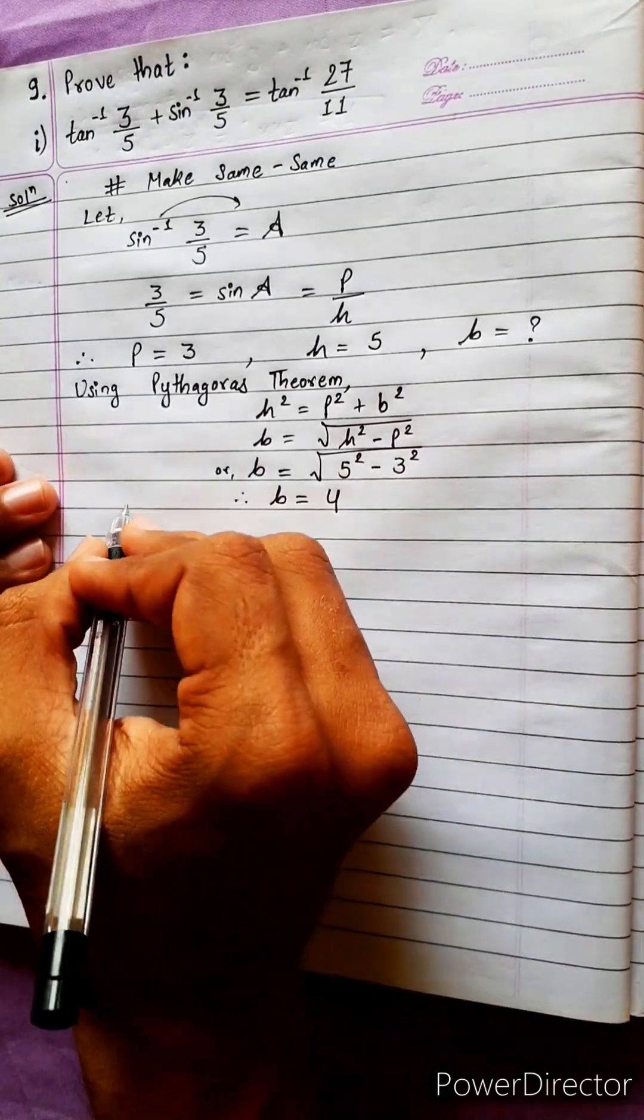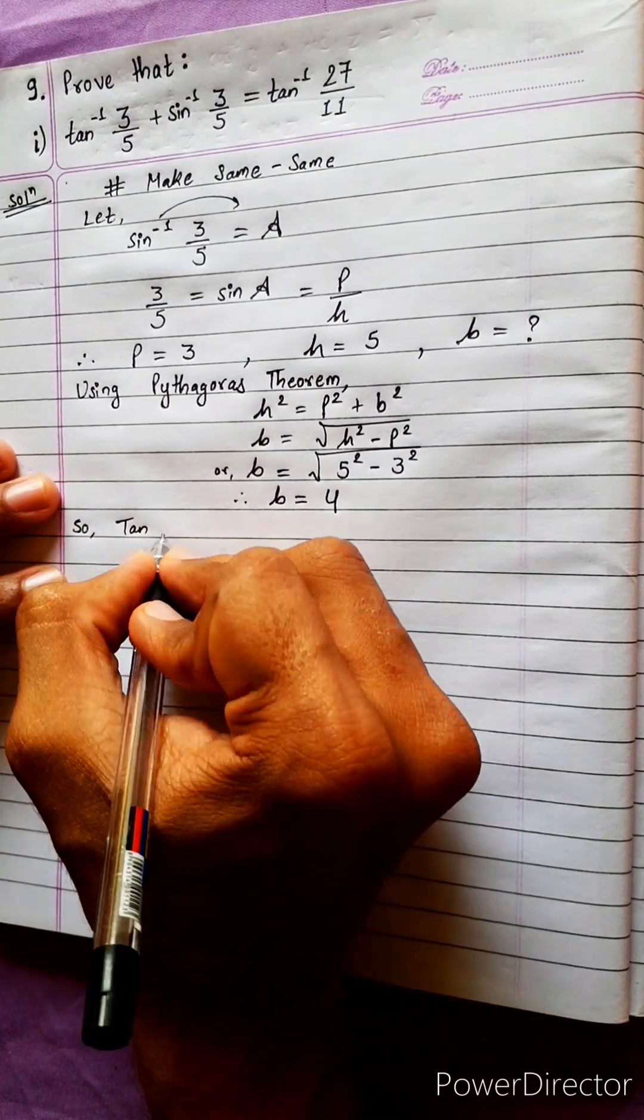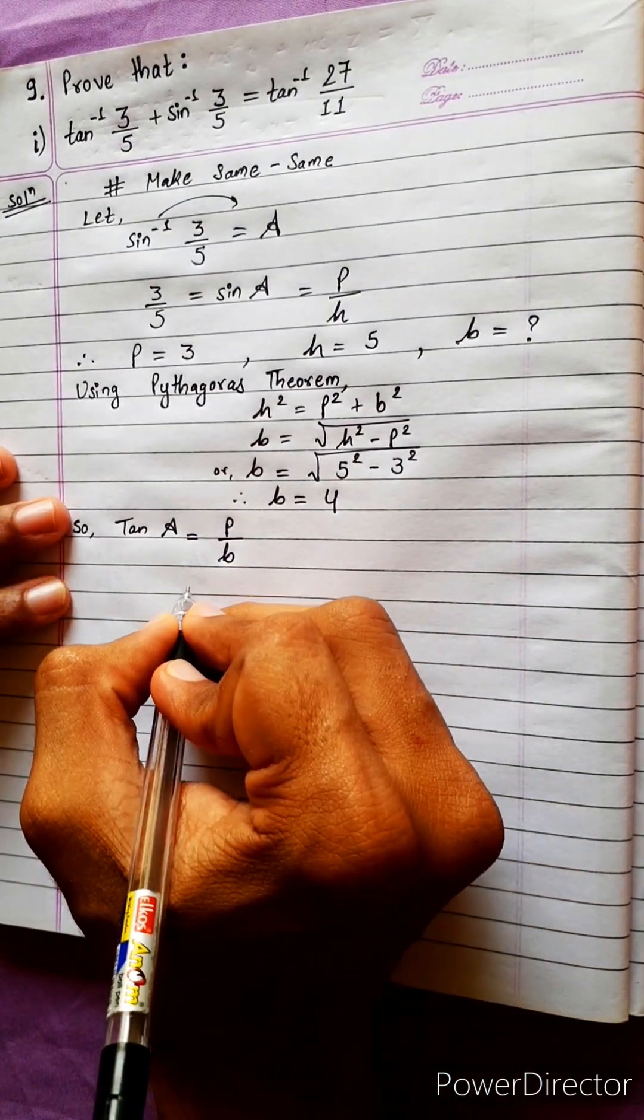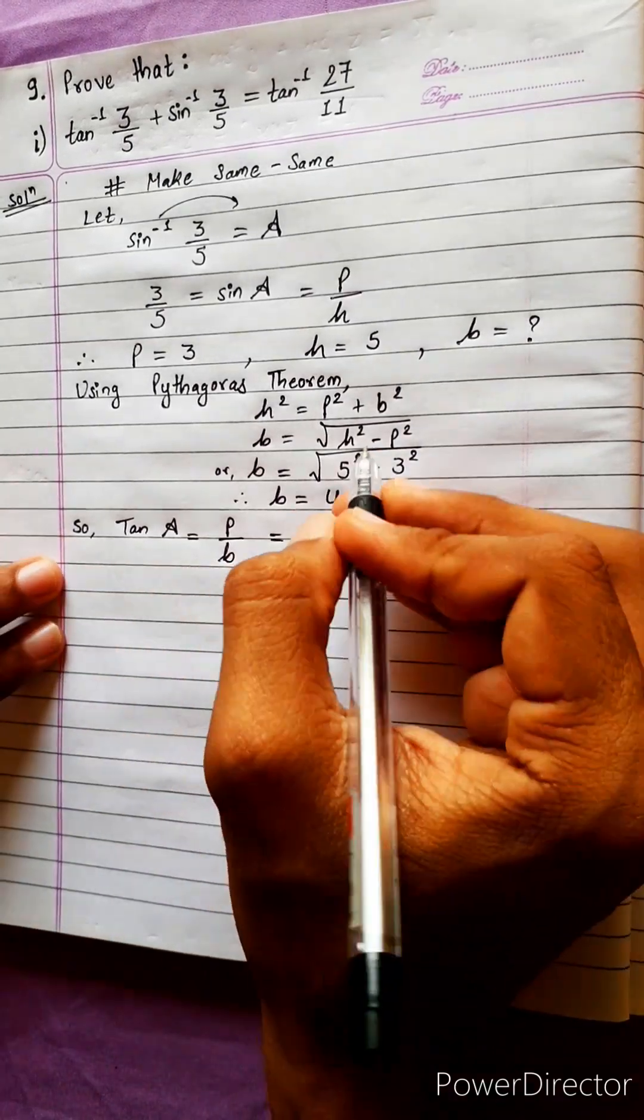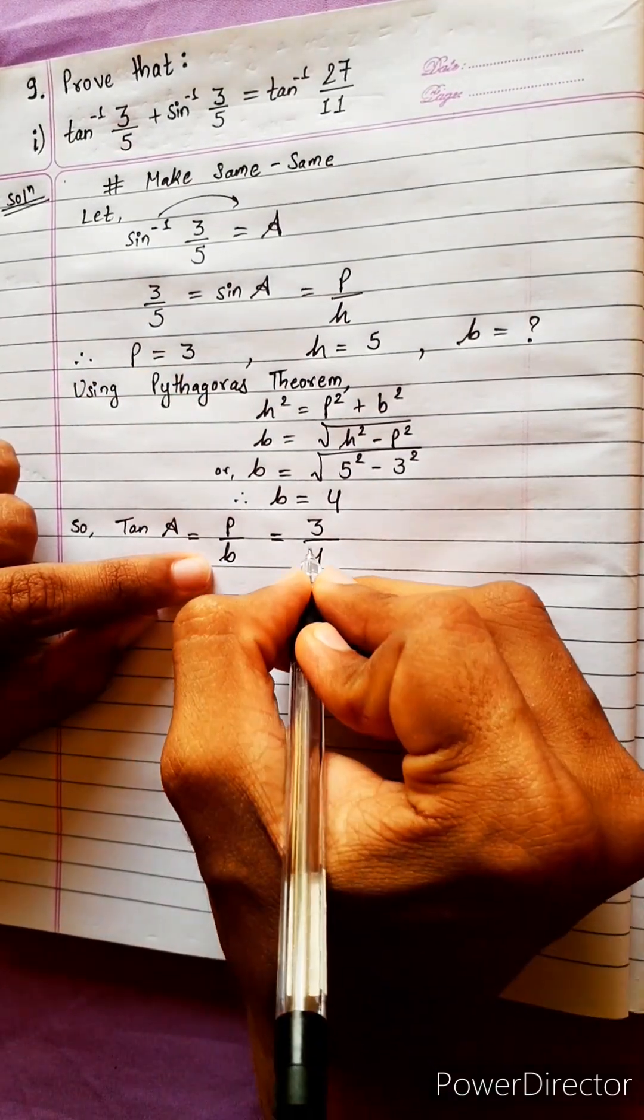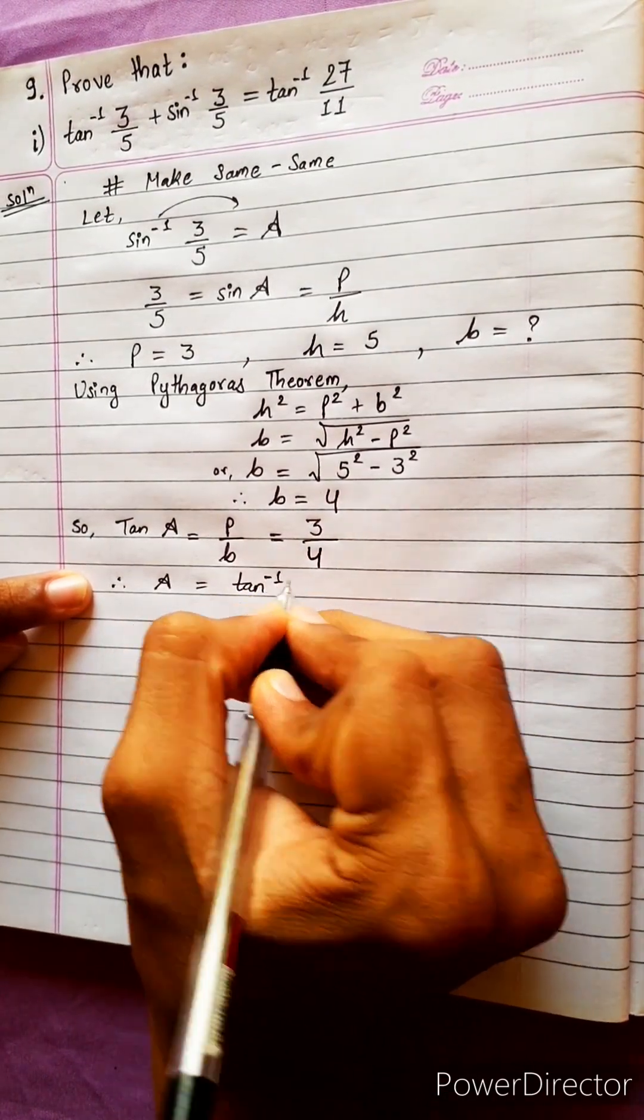So tan a equals perpendicular by base, which is 3 by 4. Cosine becomes perpendicular to base, perpendicular to base, which is 3 by base, 3 by 4.